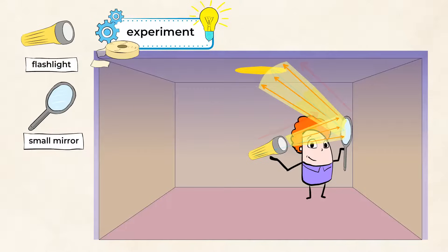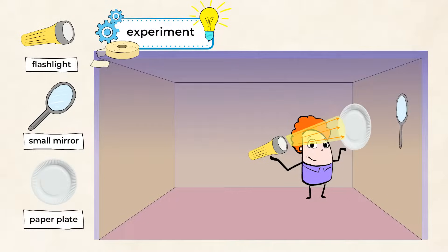Smooth, shiny surfaces like a mirror reflect more light. Well, let's try to shine the light onto something like a paper plate. Does the light reflect onto the wall? Doesn't look like it.